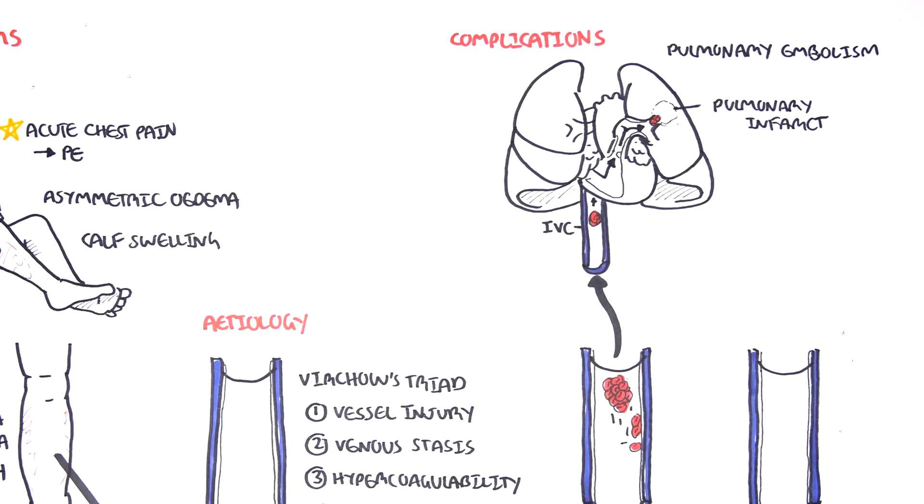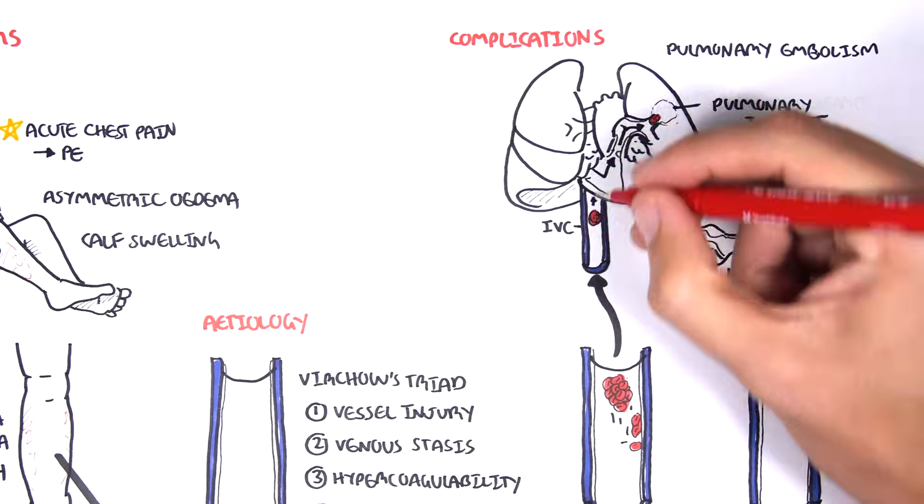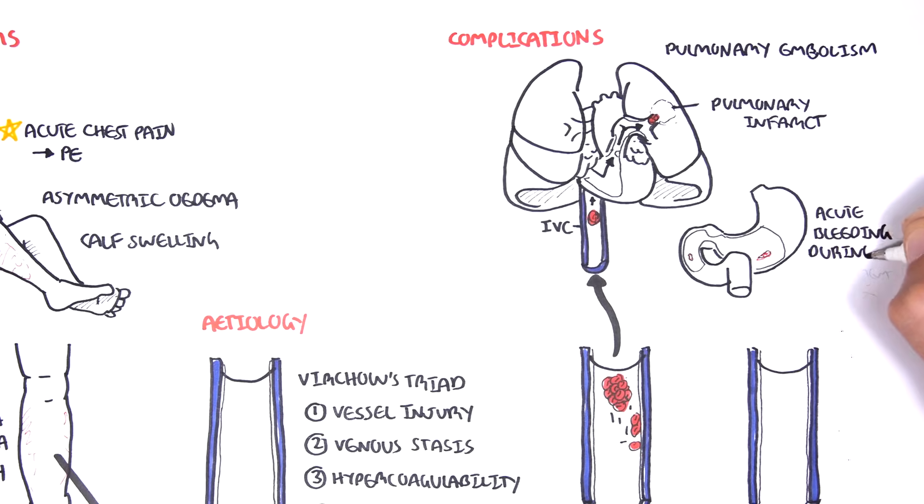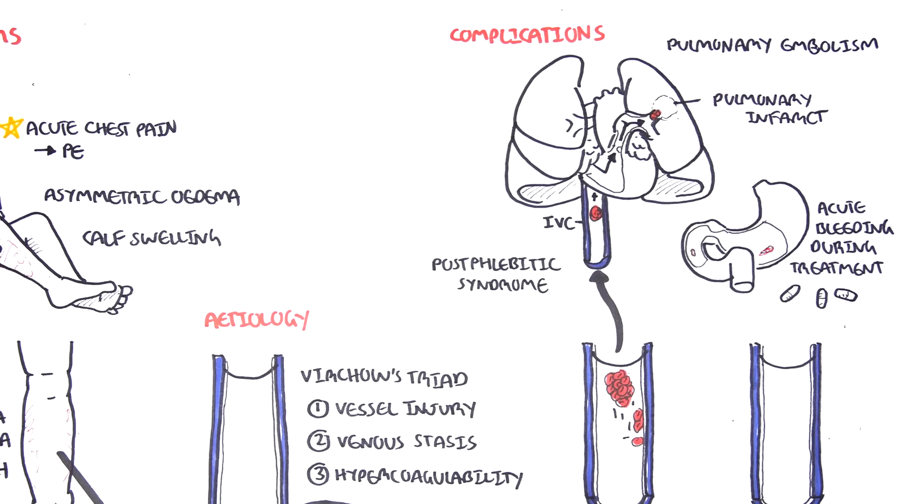Another big complication is actually the side effects of the medications people take who have deep vein thrombosis. And these medications, they can cause acute GI bleeding because the medications are anticoagulants.